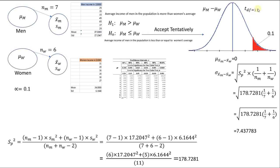We have to go to the T table, the row related to the degree of freedom of 11, and we are interested in one-tail significance of 10%. Therefore, in the column for one-tail 10% and in the row related to 11 degrees of freedom, we find that the T critical is 1.363.